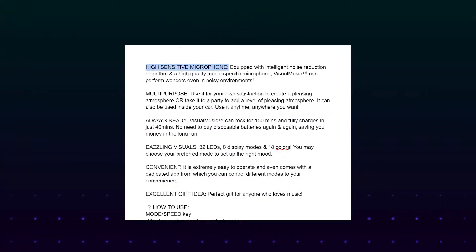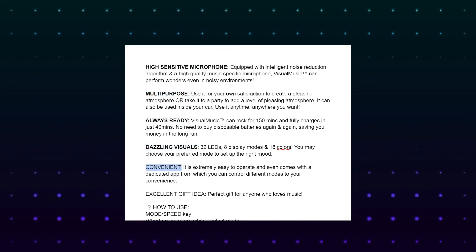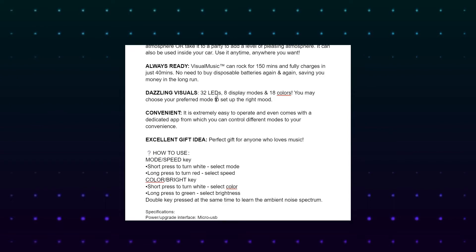Let's take an example of selling a smartphone. The first paragraph can talk about the battery, the second about the camera, the third about the display, the fourth about the operating system, and so on. You can then highlight the main words or phrases with bold and italic text. This is simple yet vital to have an amazing product description.